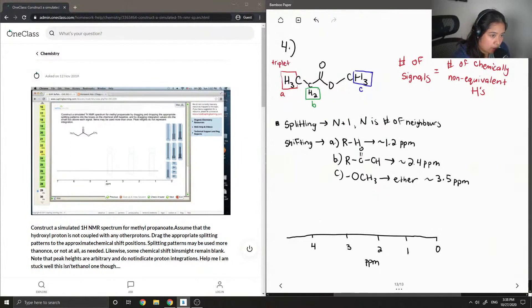So it's 2 plus 1. And then let's look at the hydrogens in B. At its neighbors, it has three hydrogens. So n plus 1, it'll split as a quartet.